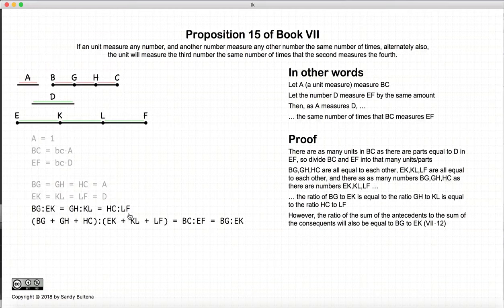However, according to Proposition 12 of this book, we know that we can sum up the right side of the ratios to the left sides or the antecedents to the consequences. So BG plus GH plus HC, the ratio of that to EK plus KL plus LF will be equal to BG to EK. So in other words, this which is equal to BC and this which is equal to EF. So BC to EF is equal to BG to EK.